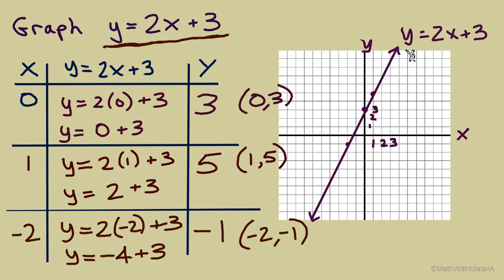We found a few ordered pairs, saw that they lined up, so we draw a straight line through those points. And there's the graph.